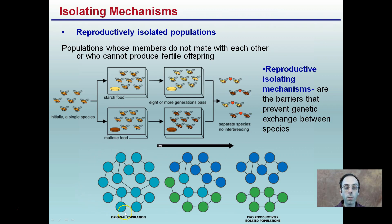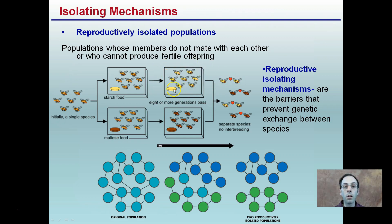We have an original population here, and we're seeing a shift into two different isolated species. With our examples of the flies, we have some that like starch and maltose, and then we have a favoritism for one versus the other. Therefore we have individuals that may only mate with those that like a certain food source, separating out and causing subsets of the population to develop.